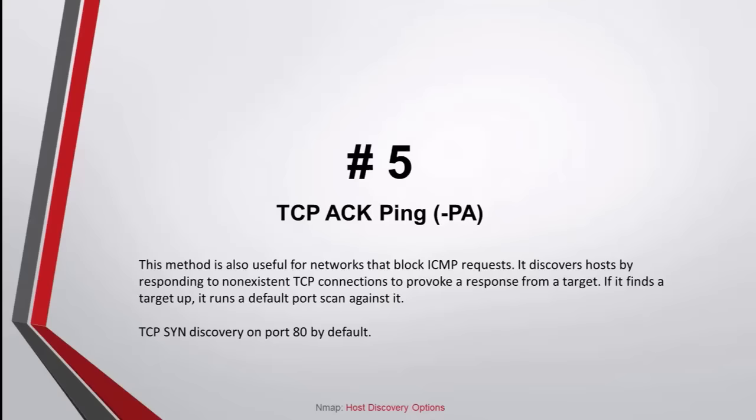Command number 5: TCP ACK ping. This method is also useful for networks that block ICMP requests. It discovers hosts by responding to non-existent TCP connections to provoke a response from a target. If it finds our target is up, it runs our default port scans against it. TCP ACK discovery works on port 80 by default.